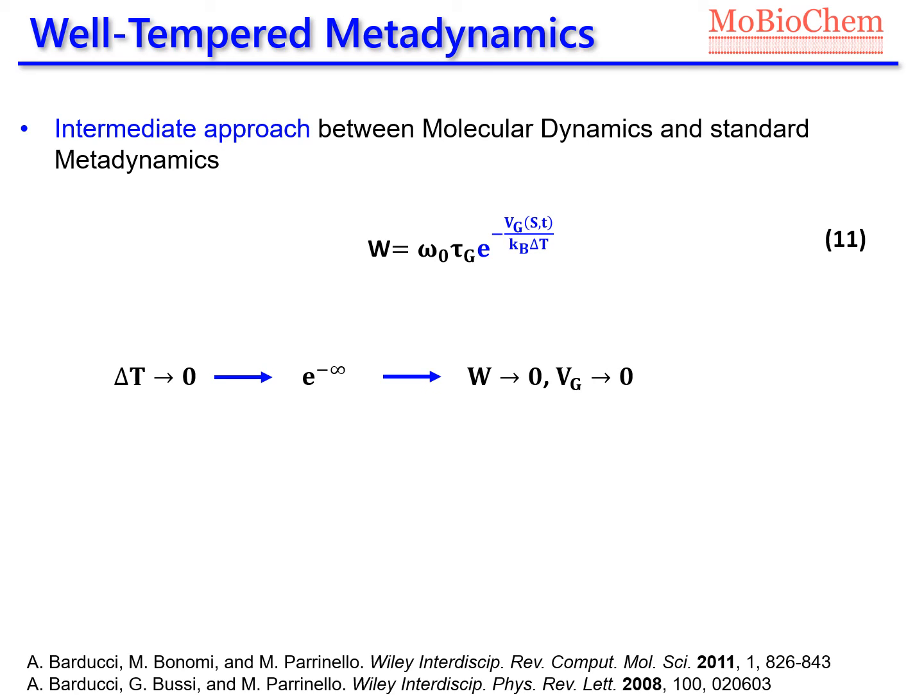And so the height of the Gaussian function and the bias potential itself would tend to 0. This corresponds to the case of the standard molecular dynamics.